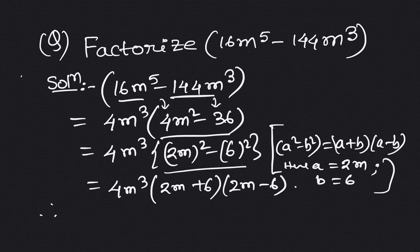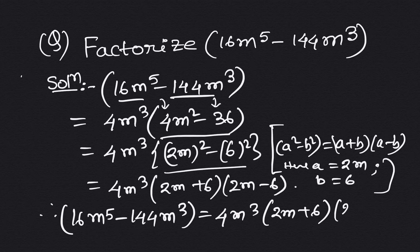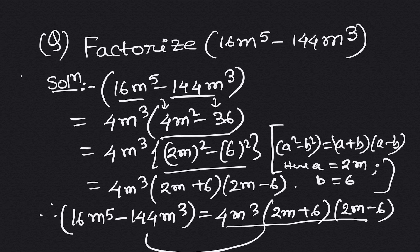So our required solution is here: 16 into m to the power 5 minus 144m to the power 3 equals to 4 into m to the power 3 into 2m plus 6 into 2m minus 6. This expression is the factorized form of the given expression 16m to the power 5 minus 144m to the power 3, which is our required solution.